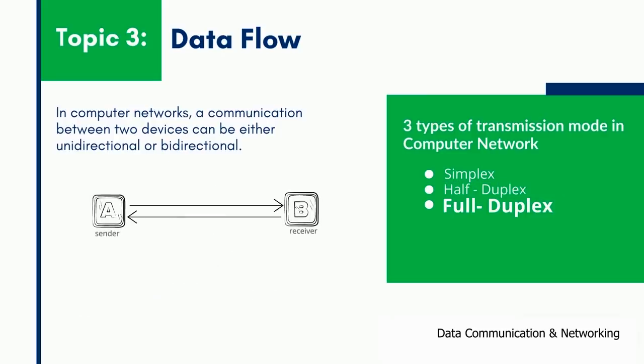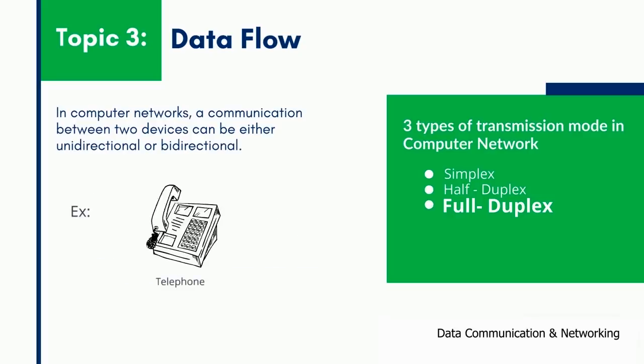Whereas full duplex communication is a two-way communication where signals travel in both directions simultaneously. One common example for full duplex communication is the telephone network. When two people are communicating by telephone line, both can talk and listen at the same time.